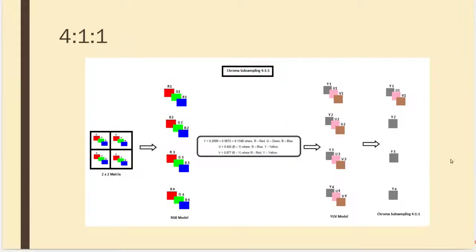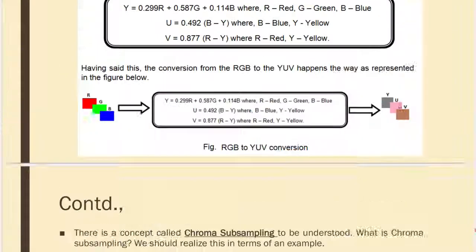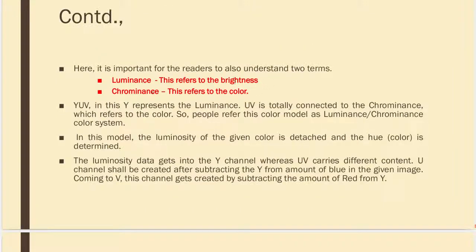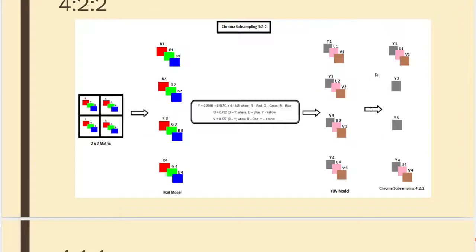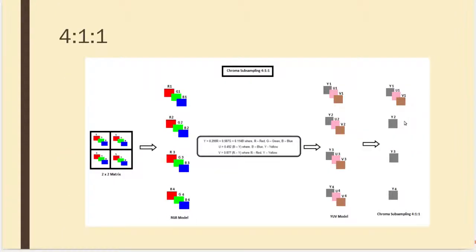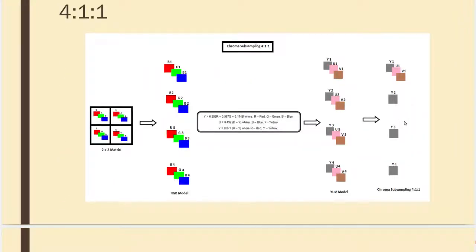In 4:1:1, I have all 4 Y values available, but only 1 U and only 1 V. Remember: luminance refers to brightness, chrominance refers to color; Y represents luminance and UV represents chrominance. What we do in these schemes is we do not touch Y at all — we only adjust U and V. Adjusting the color information does not significantly affect image quality because our eyes won't recognize it.